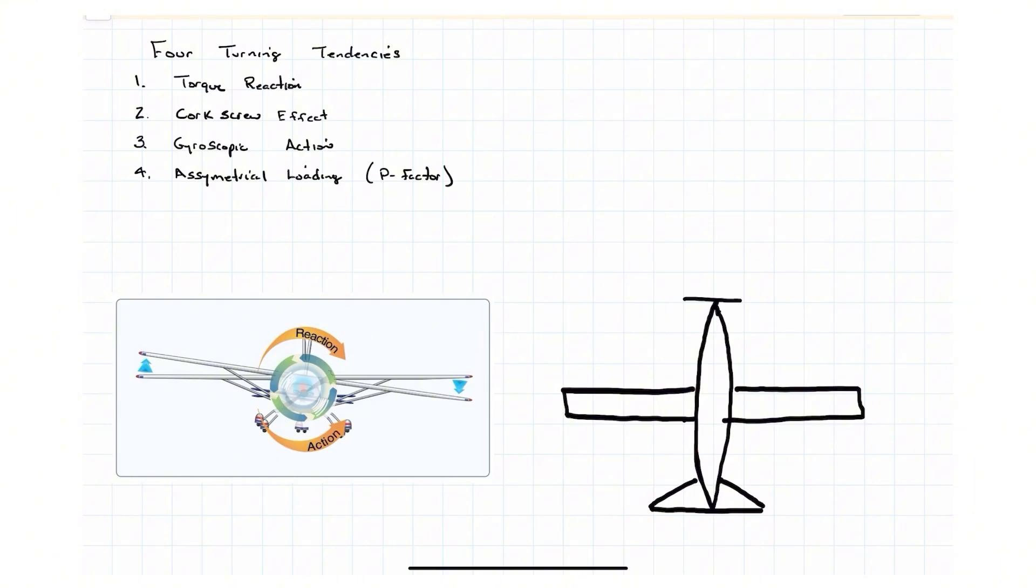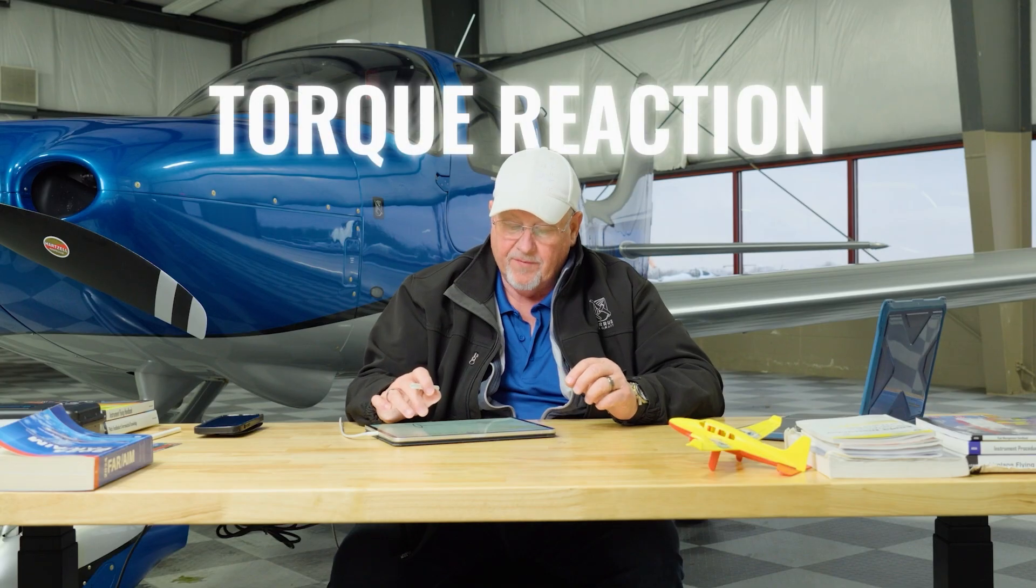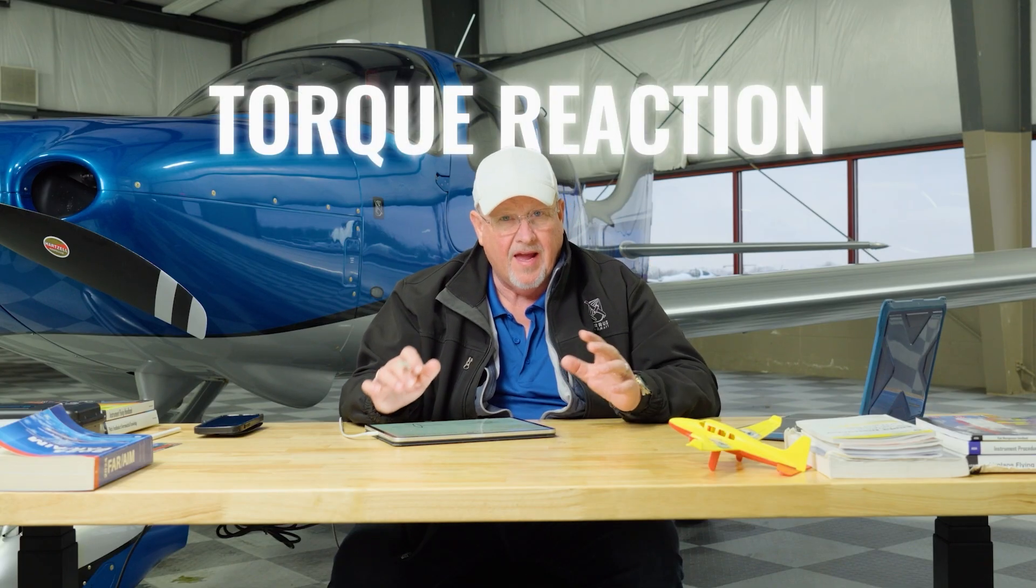The first one we're going to talk about on the four turning tendencies today is torque, also probably better known as torque reaction. That's what the handbook of aeronautical knowledge calls it, the pilot's handbook of aeronautical knowledge. We're going to talk about torque reaction. We have to understand that there's torque in the air and torque on the ground.